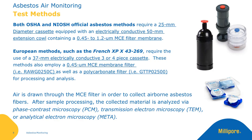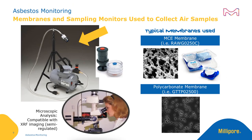In each of these methods, air is drawn through the MCE filter in order to collect airborne asbestos fibers on its surface. After sample processing, the collected materials are analyzed via either phase contrast microscopy, transmission electron microscopy, or analytical electron microscopy. This slide depicts many of the materials and some of the equipment necessary to sample for asbestos, including an air pump, as per the yellow arrow, and two examples of filter cassettes. MCE membranes are depicted on the top right, a TEM image of a polycarbonate membrane is shown on the bottom right, and microscopic analysis is demonstrated on the bottom left.